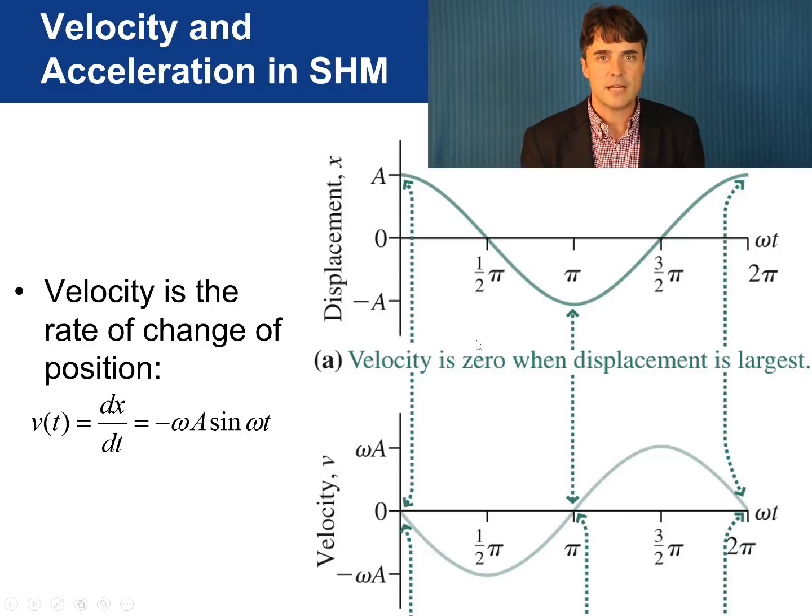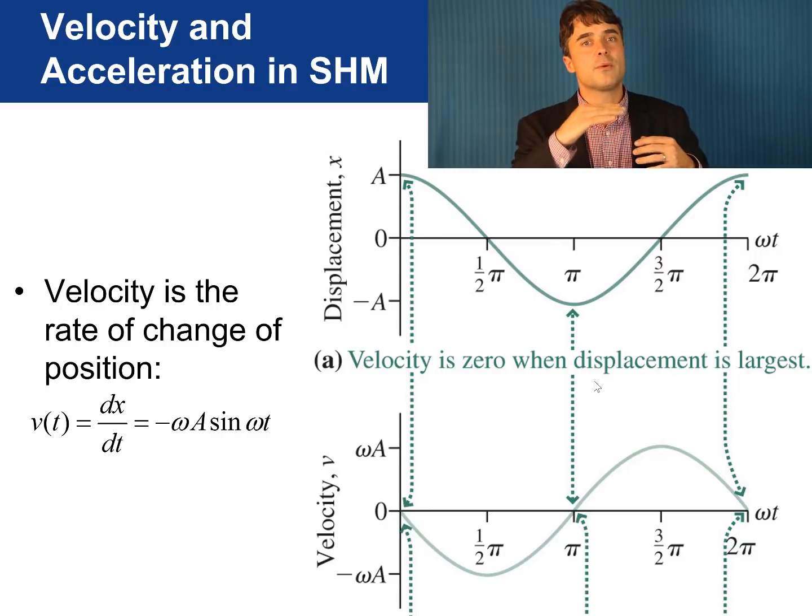Then, as time increases, the velocity is negative at first, and then it goes back to zero when omega times t equals pi. Note that the velocity is always zero at the turning points of the oscillation when x reaches its maximum or minimum value.